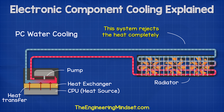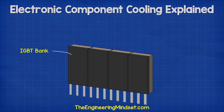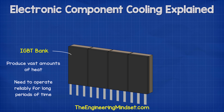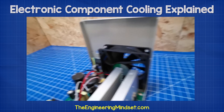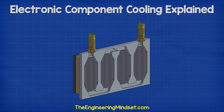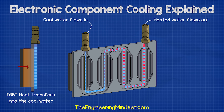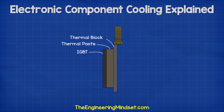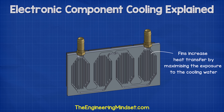This method of cooling is increasingly used in power electronics, especially in higher power applications, where we often find these banks of IGBTs. These banks of IGBTs generate huge amounts of heat and need to operate reliably for long periods of time. Instead of spacing them out like in the bench power supply, we can mount these to a thermal block — basically a heat sink or heat exchanger that water flows through instead of air. As the IGBTs generate heat, this will pass through the block and into the water. Between the IGBTs and the thermal block, we have a thick layer of thermal paste which helps to increase the heat transfer. Inside the block, we have fins to help increase the surface area and maximize the exposure to the cooling water.